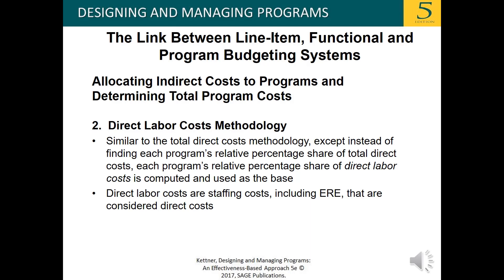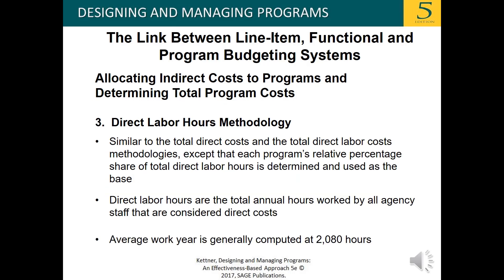Direct labor costs are staffing costs, including ERE, that are considered direct costs. The direct labor hours methodology is similar to the total direct cost and total direct labor cost methodologies, except that each program's relative percentage share of total direct labor hours is determined and used as the base. Direct labor hours are the total annual hours worked by all agency staff that are considered direct costs, with the average work year generally computed at 2,080 hours.